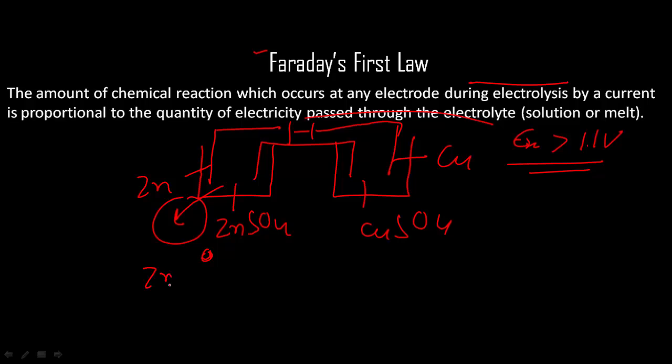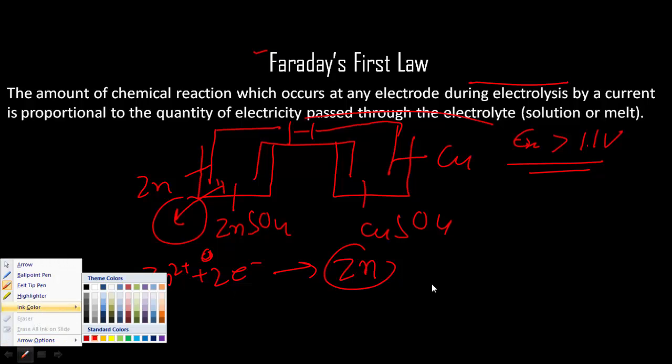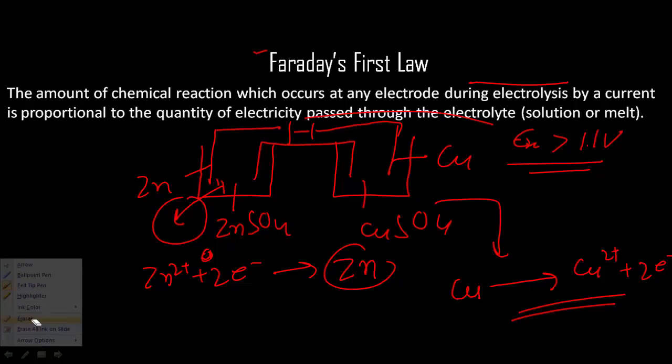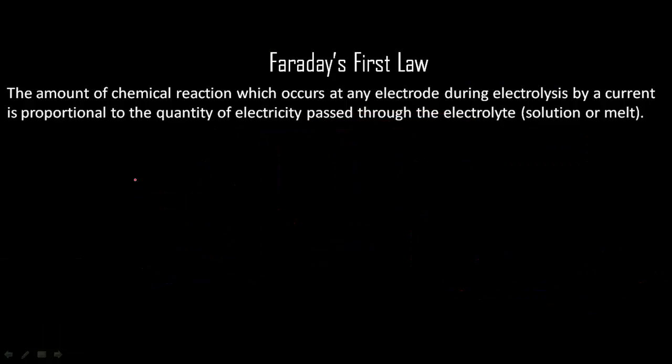What happens is that Zn2+ takes an electron and gets converted into zinc, so zinc is liberated here. At the cathode, copper will convert into copper 2+ and two electrons will be released. So in electrolytic cells, the amount of reaction taking place at any of the two electrodes, or amount of substance liberated at the electrode, is actually the weight. The amount of substance liberated or produced is directly proportional to the amount of electricity passed through that solution.